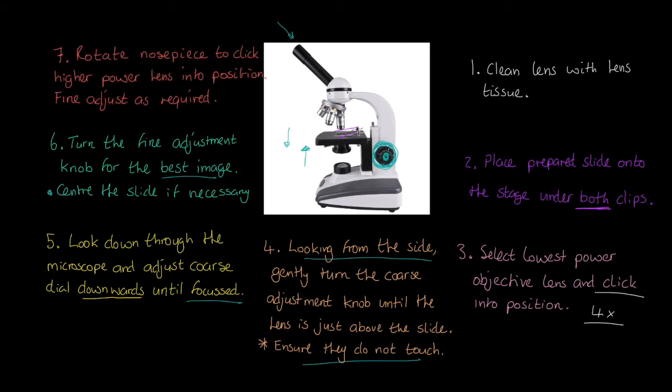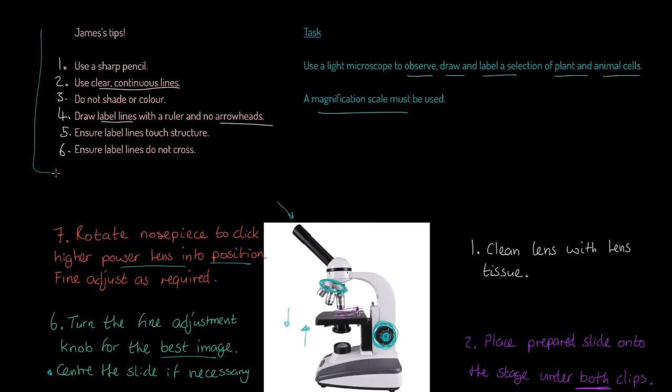And finally, we're going to rotate the nose piece to click the higher power lens into position, and then what we do is we adjust again on the fine adjustment knob to get that sharp focus with now a more magnified image. And if you follow that process, you're going to get really clear, clean, and hopefully sharp images and views of cells that you're ultimately going to draw. So we've talked a lot about the process of observing it and doing that correctly.